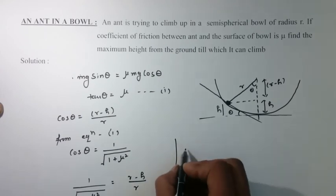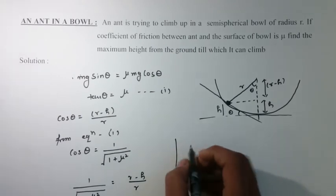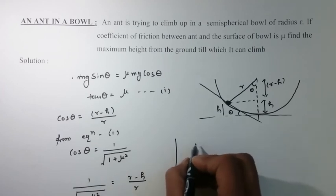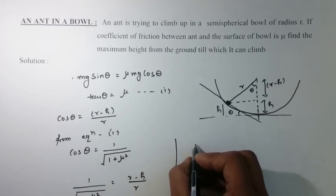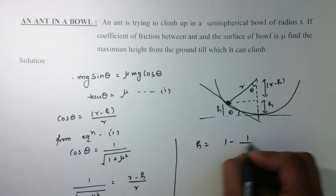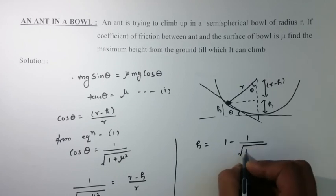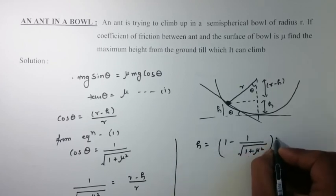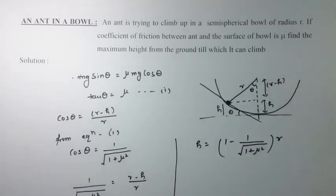Further, on solving this equation we can find the value of h which would be equal to h equals 1 minus 1 upon under root 1 plus mu square, multiplied by r. Thank you.